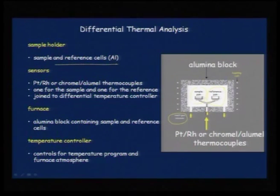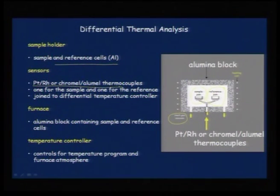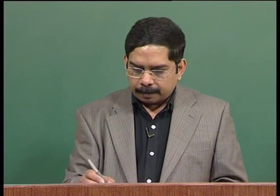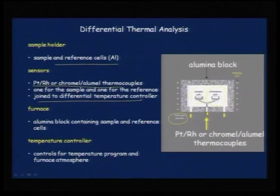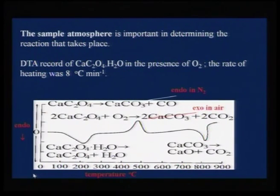In differential thermal analysis, you have an alumina block with a sample pan and a reference pan, both connected to the same thermocouple — platinum-rhodium or chromel-alumel — and purged with vacuum or inert gas. The difference in temperature between the sample and reference determines delta T, which is plotted against temperature. Sample holders are usually aluminum — less expensive and discarded after use to avoid contamination.